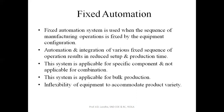There is inflexibility of the equipment to accommodate product variety — we are not able to add variety to a specific component. As we studied, the sequence of manufacturing operations is set, so we cannot add additional operations or delete any existing operation. This is the drawback of fixed automation: it is best for bulk production where a high volume of a single product is required, but we cannot combine any other product on the same line.